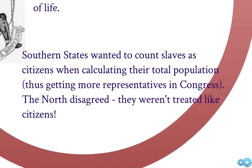The other major issue at the convention was that southern states wanted to count slaves as citizens when calculating their total population. In the House of Representatives, you get more votes if you have more people in your state. The southern states wanted to count their slaves so they'd have more votes in the House. The North disagreed, saying that slaves were not voting citizens — they weren't treated like people, so they shouldn't be counted like people.